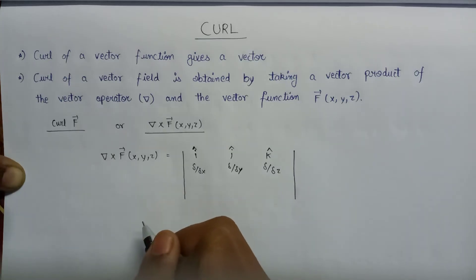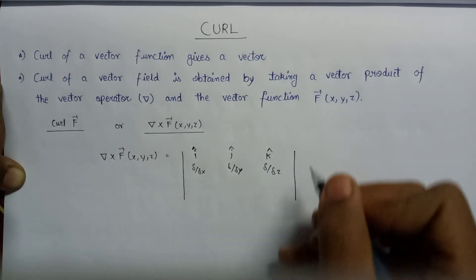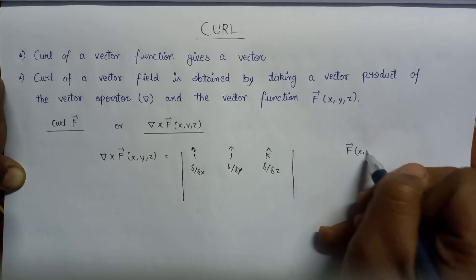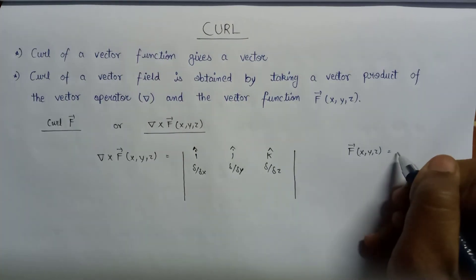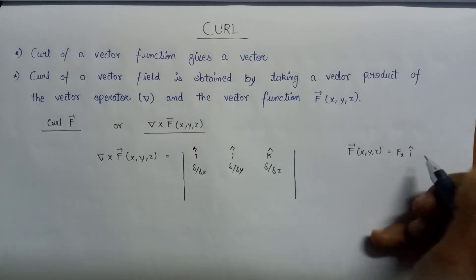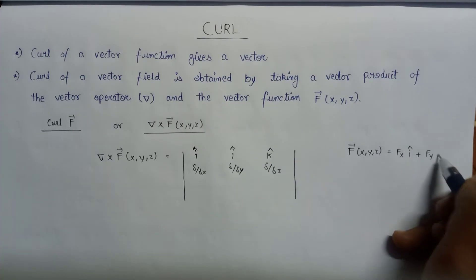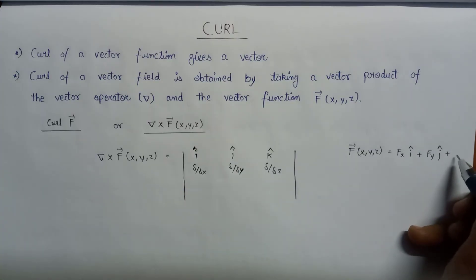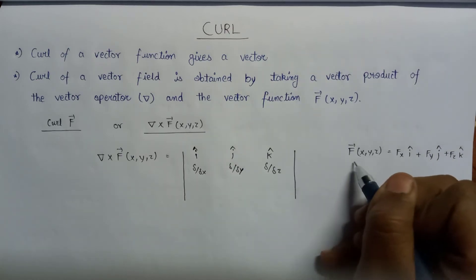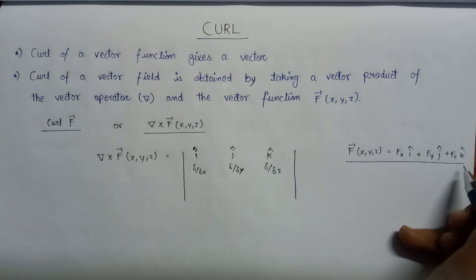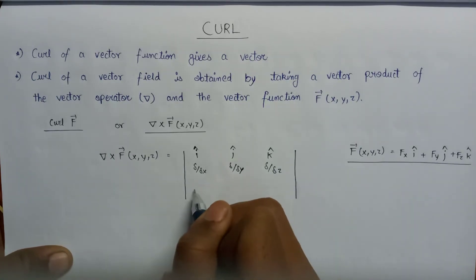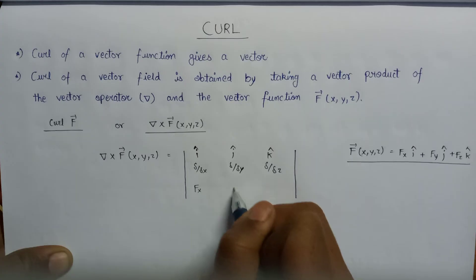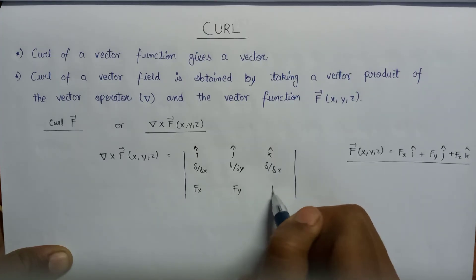Now since we know that the vector f vector is given as f of x, y, z which equals f_x into i cap plus f_y into j cap plus f_z into k cap. So this is the value for f vector. Now on comparing the coefficients of i cap, j cap, and k cap, we can write it as f of x here, then f of y and f of z.